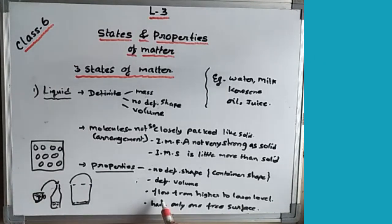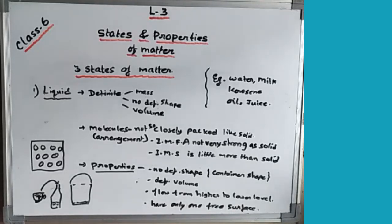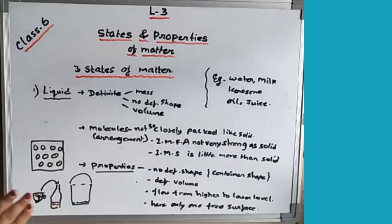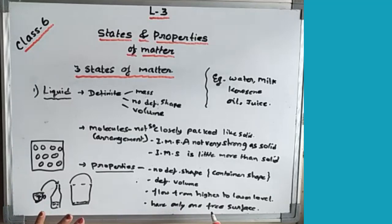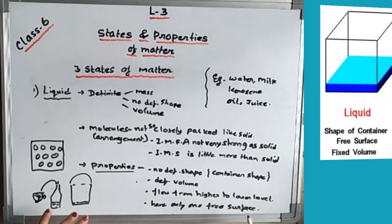Now coming to the flow — from higher level to lower level. Water always flows from a higher to a lower level. You will never find water moving upward from a lower level unless external pressure is applied to it. The general tendency of any liquid is to flow from higher to lower level.